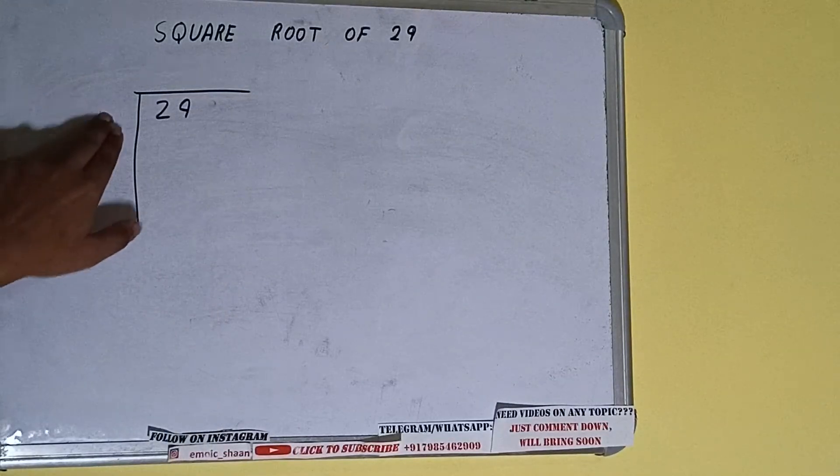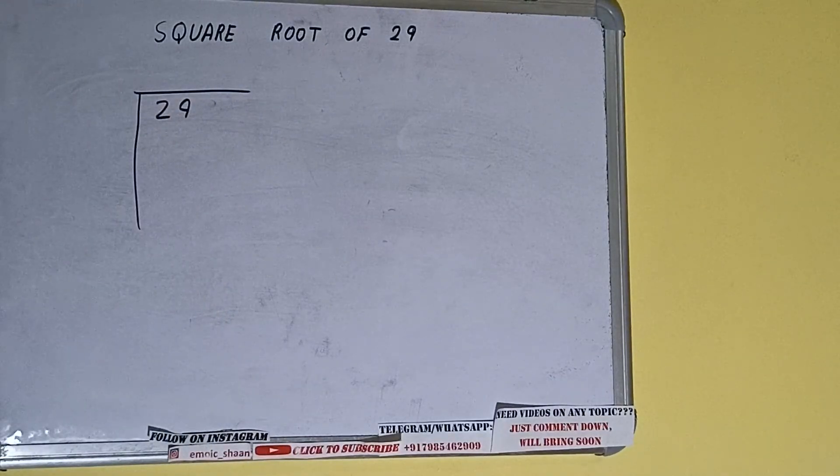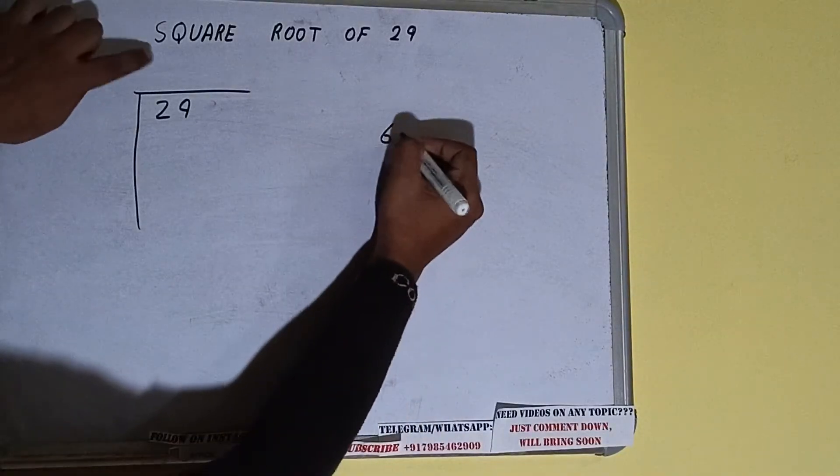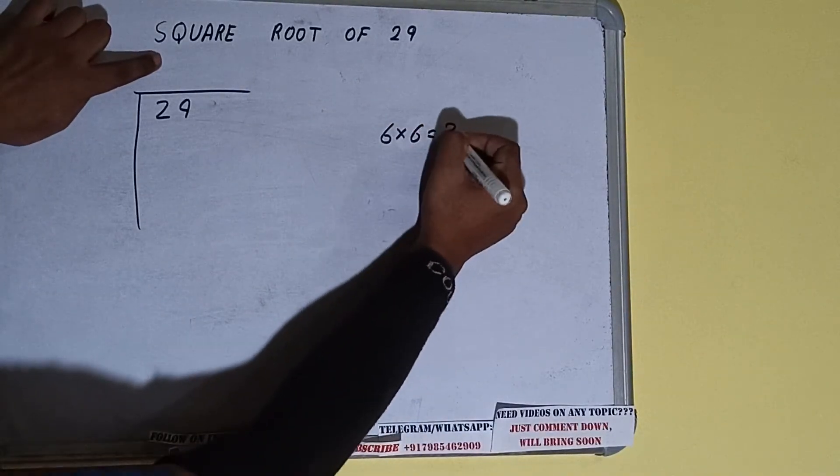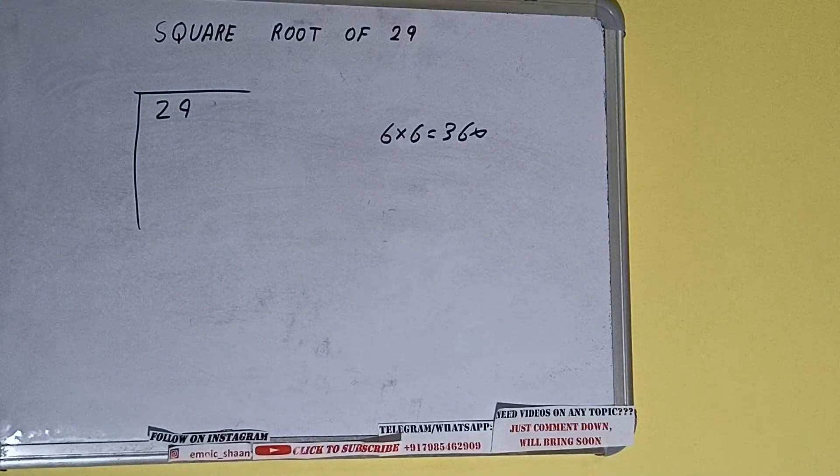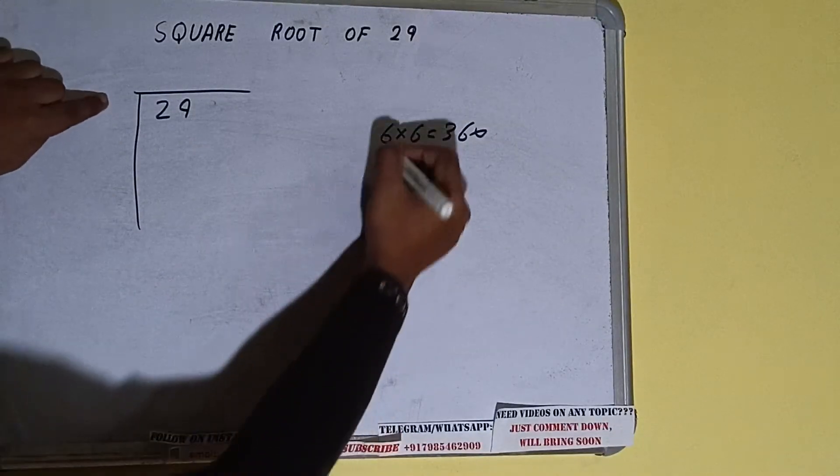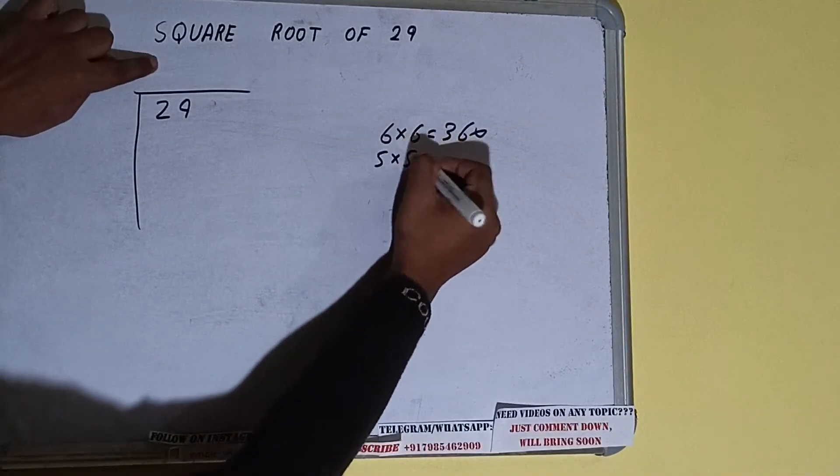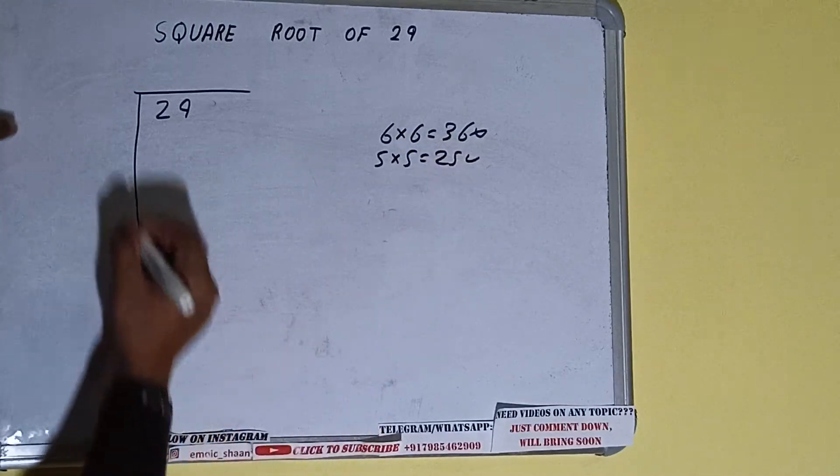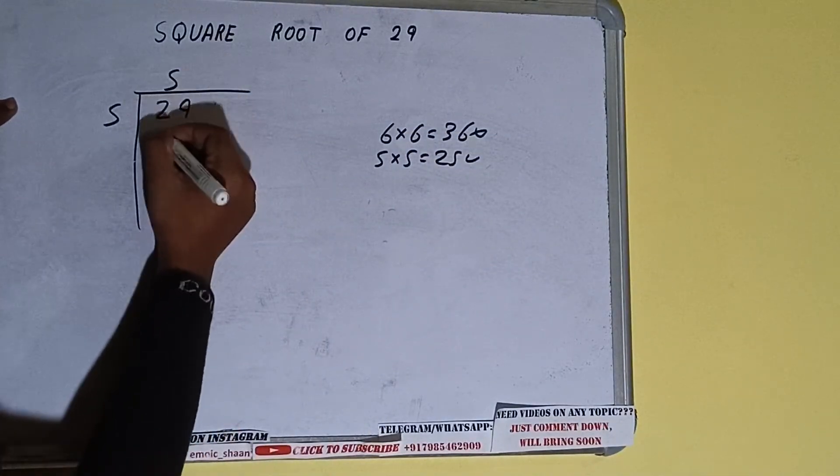about is whatever number we write here we have to write here also. So if we write 6 here and 6 here it will be 36 which is greater than 29 so we cannot use it. If we write 5 here and 5 here it will be 25 which is good to use. So 5 here and 5 here, 25.